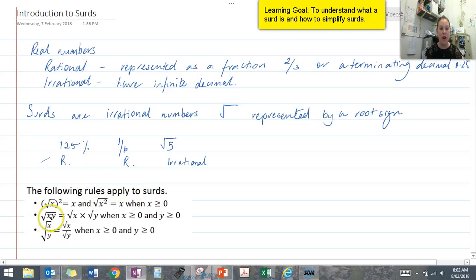If we have two values multiplied together beneath the square root, that's the same as each of those being an individual square root. So for example, if I had the square root of 2 times 3, that's the same as writing the square root of 2 times the square root of 3.